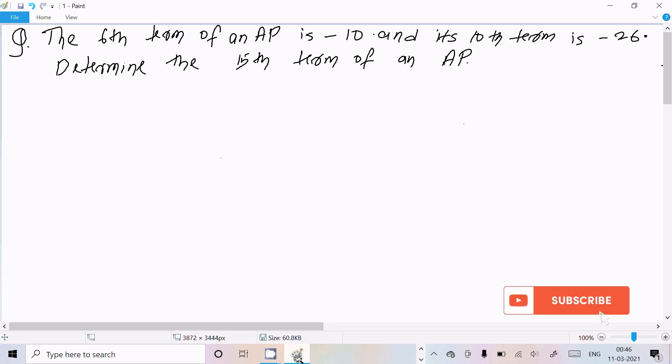Hello friends, in this video lecture I'm going to find out the value of the 15th term of an AP. The 6th term of an AP is -10, so T₆ is -10, and the 10th term is -26.